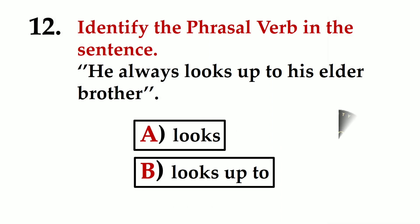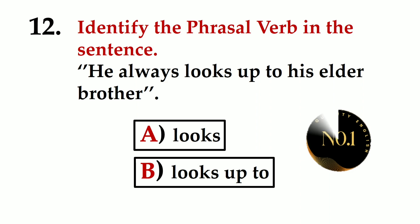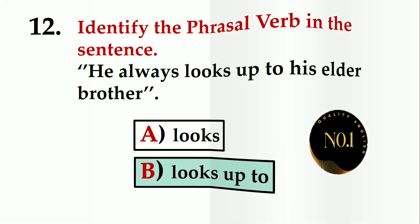Number twelve: Identify the phrasal verb in the sentence 'He always looks up to his elder brother.' A) looks, B) looks up to. The correct phrasal verb is B) looks up to.